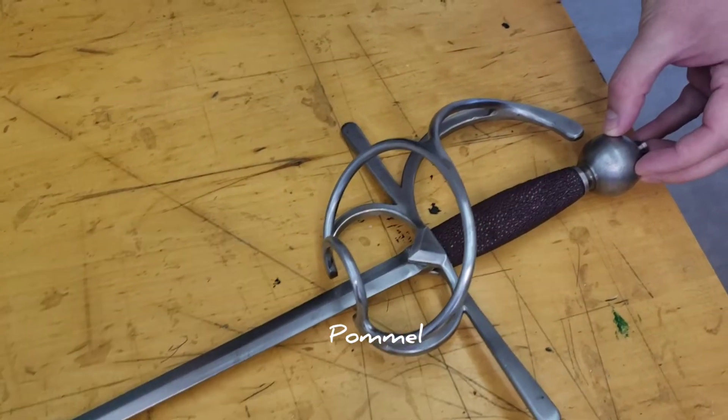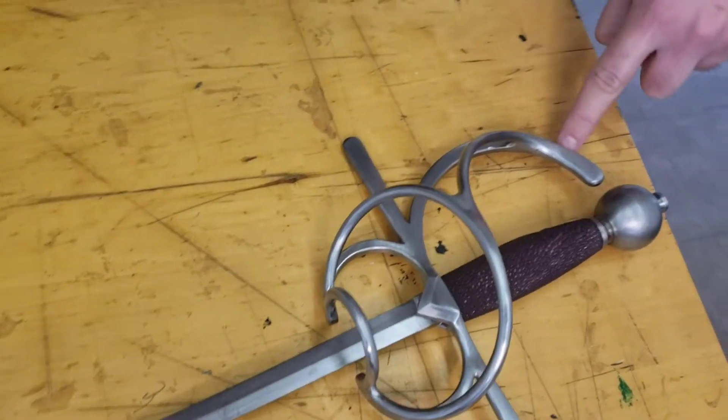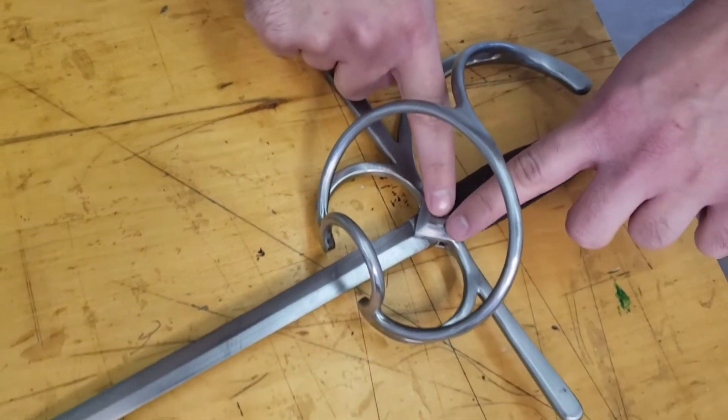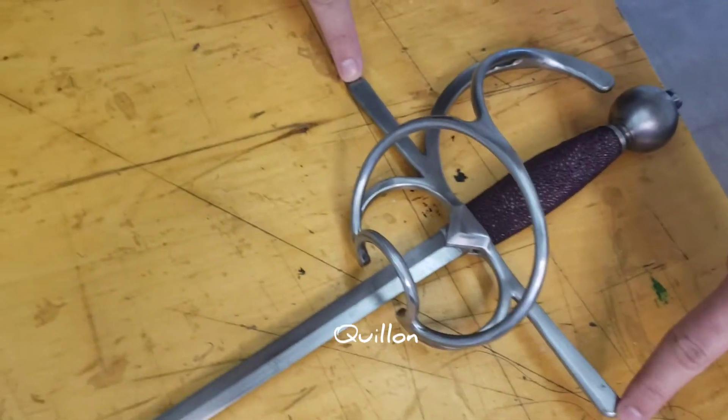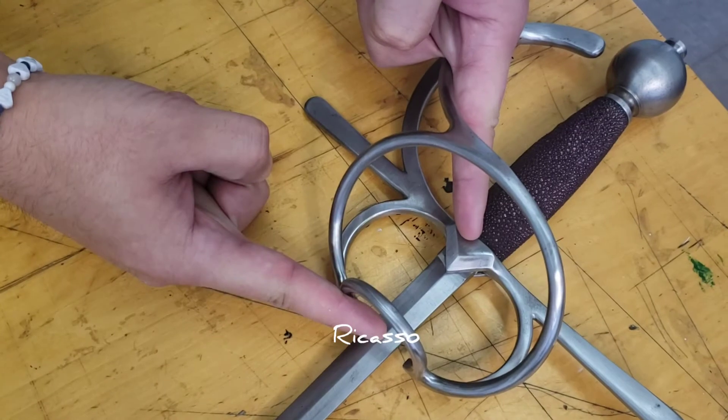At the very bottom we have the pommel, then the handle. This piece here will be the knuckle bow. These long pieces that come out this way are called the quions, and this small space between is called the ricasso.